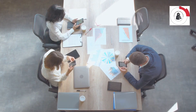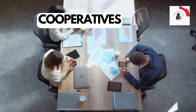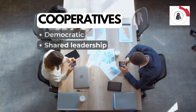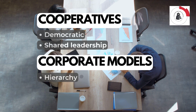Authority. In cooperatives, the authority is held by the members — it is democratic. Leadership cannot be assumed by a single person and must be shared, which has enabled cooperatives to withstand the current economic crisis and perform better. In other corporate models, the authority is held by whoever holds the majority of the capital, and a hierarchical approach to governance and decision-making predominates in capitalist companies.